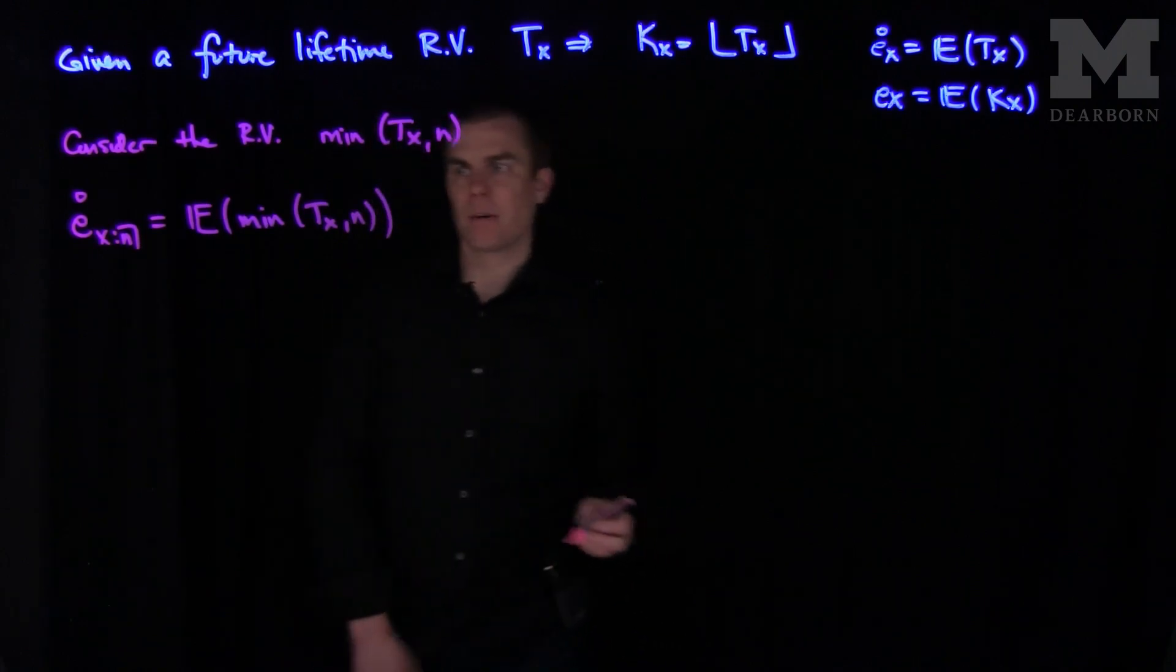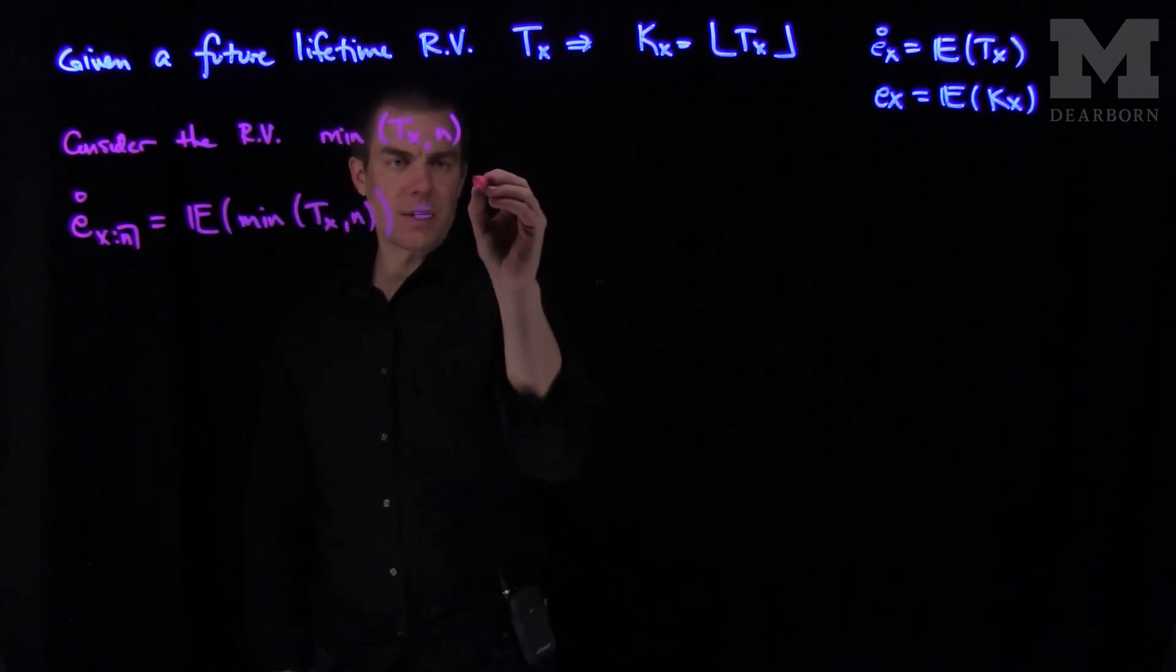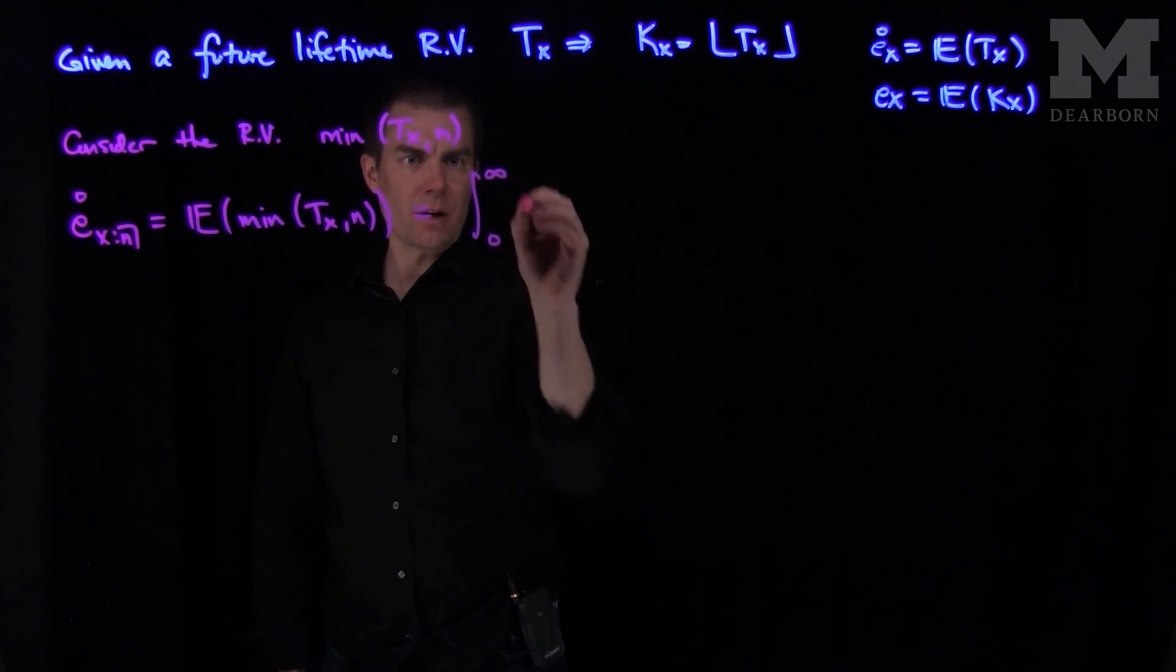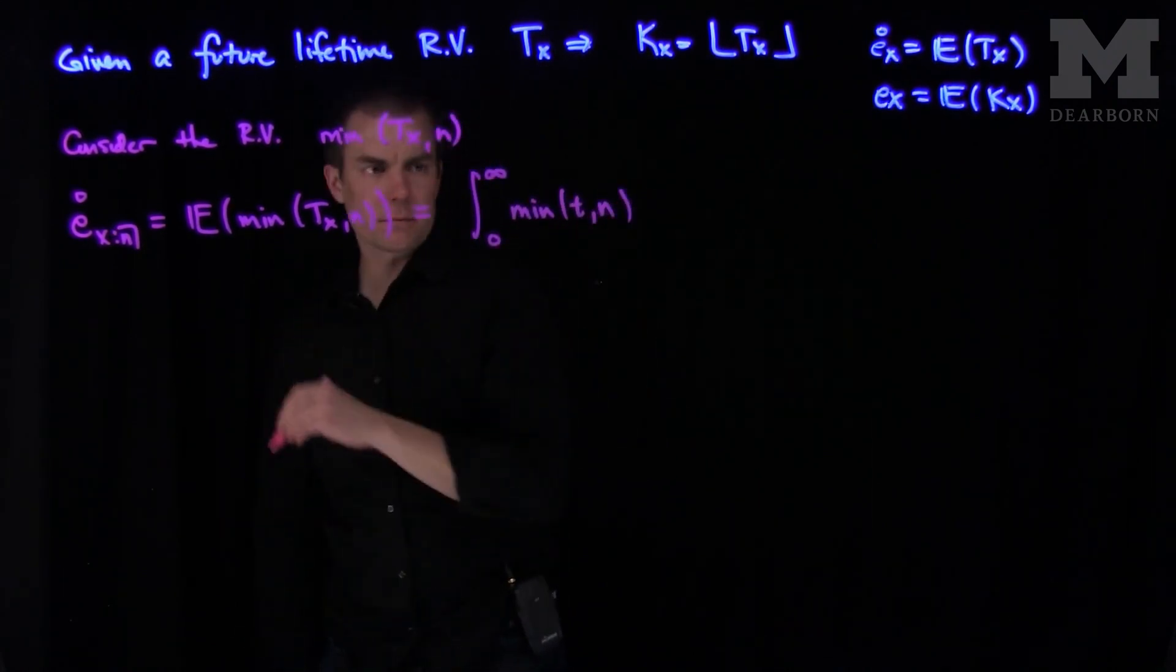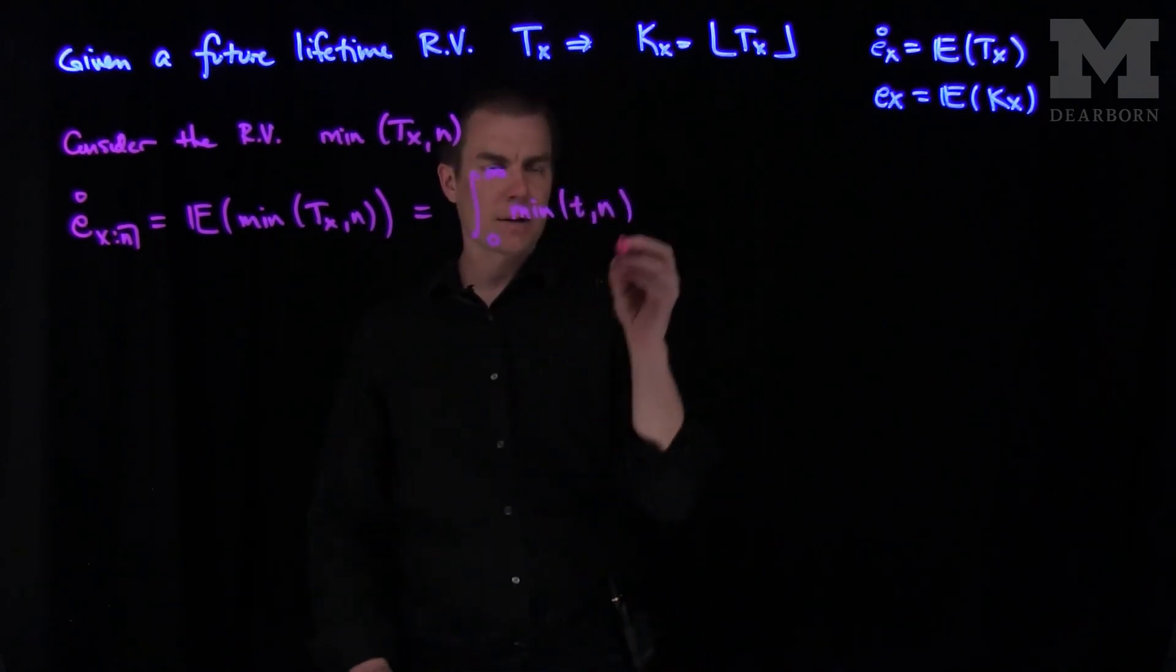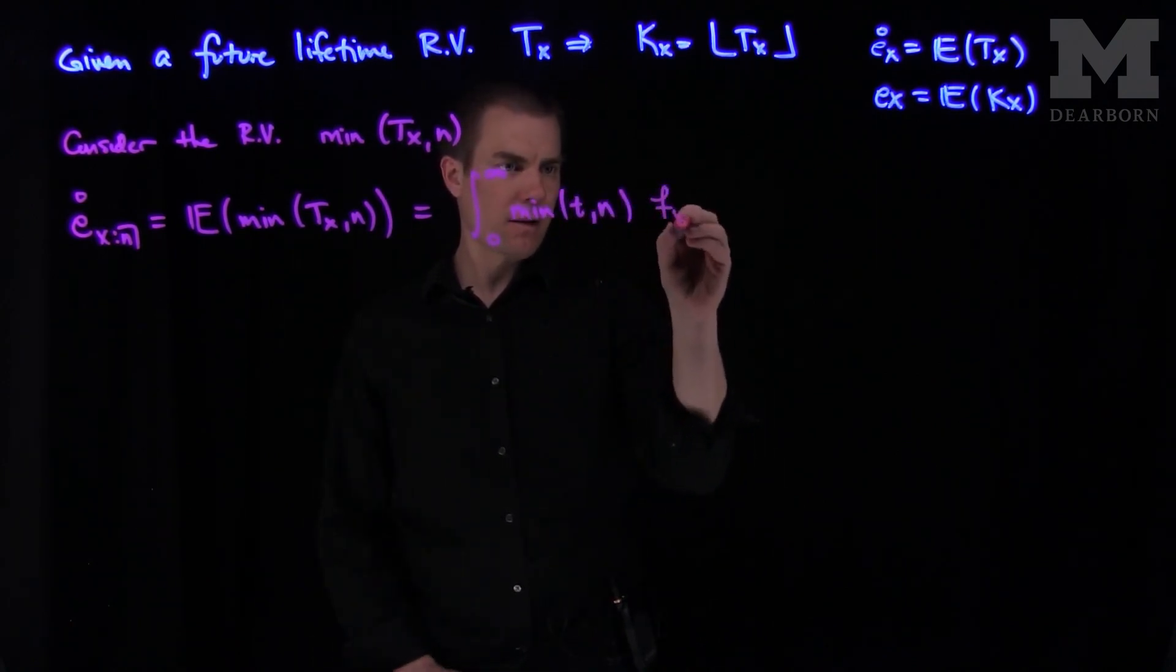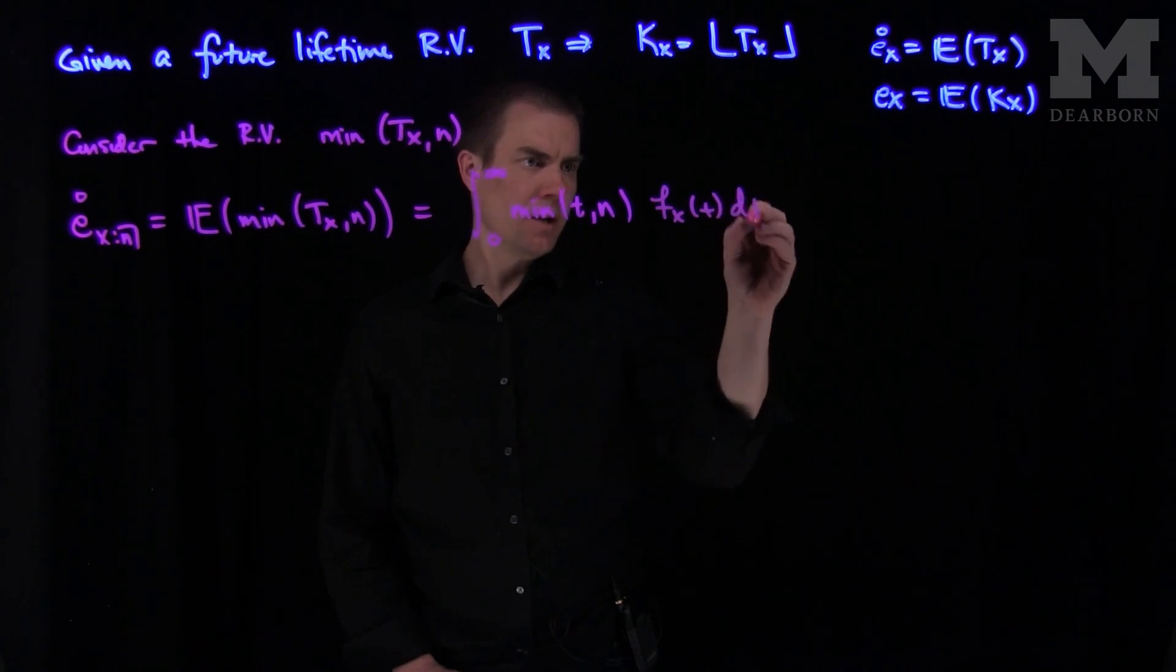And so to compute this expected value, we'll say this is the integral from zero to infinity, the minimum of t and n, and then I'll plug in the pdf for tx. So we're going to have fx(t) dt.